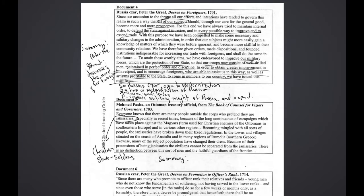Document 4 is written by Peter the Great, the famous Russian czar — another word for Russian emperor. You can see that I conducted SOAP analysis on this. I physically write SOAP at the bottom and give a one-sentence summary, because I intend to source this document. Remember, sourcing a document includes a summary plus a point-of-view statement, and a point-of-view statement includes all the elements of SOAP.